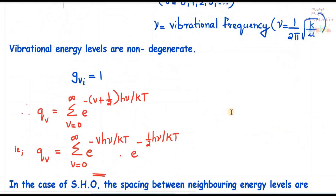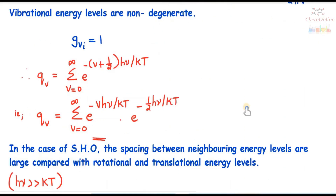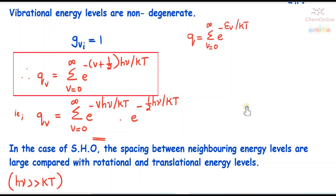If the vibrational energy levels are non-degenerate, we can write g = 1. We have seen that the partition function can be expressed as a summation. For vibrational levels, q_v equals the summation from v = 0 to infinity of e raised to minus ε_v by kT, where ε_v is the vibrational energy. So, substituting for ε_v, we get q_v equals summation from v = 0 to infinity of e raised to minus (v + ½)hν by kT.